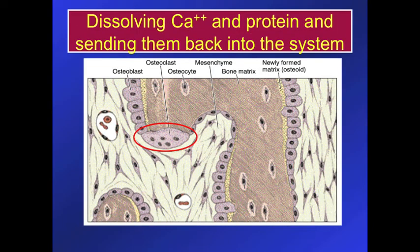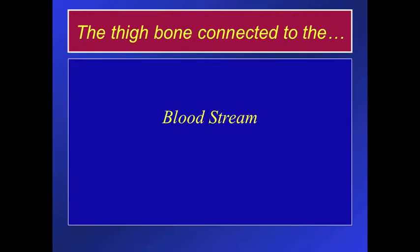Why are they there? They're there to dissolve the calcium and the protein and send them back into the bloodstream in order to make new cells. It's actually an absolutely necessary thing. Unlike the old song, the thigh bone is connected to the bloodstream, because the calcium in the body has to maintain very tight limits or else you go into spasm — a sort of tightness that is inconsistent with life. The heart is a muscle. But the thigh bone is also connected to the clock.